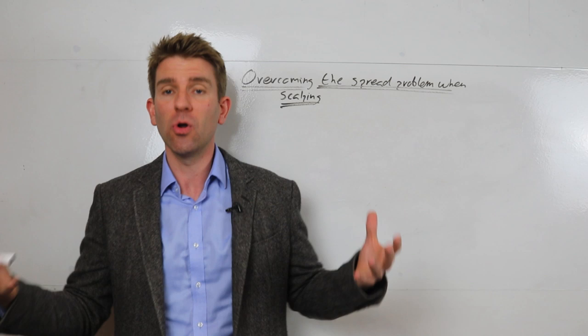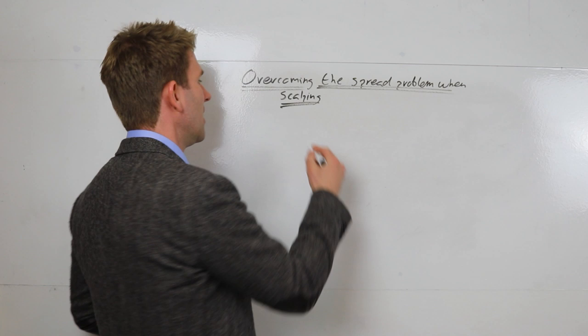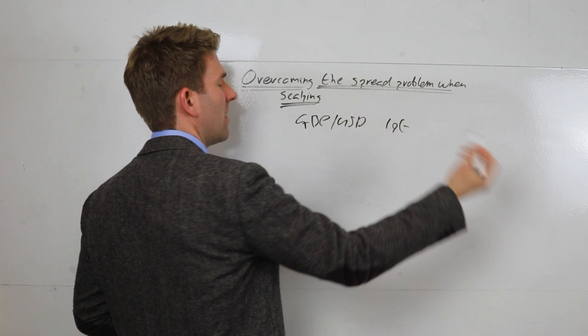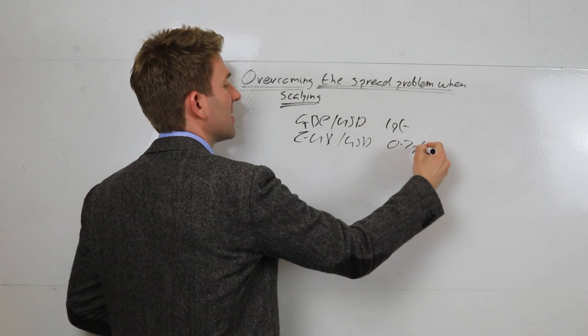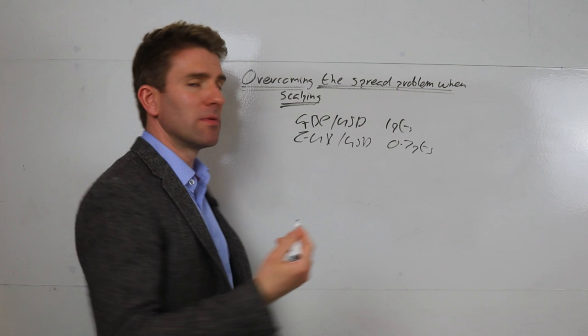If you imagine something like GBPUSD is around what is it, about one point at the moment. It varies, doesn't it. EURUSD is about the same, but it's normally about 0.7, something like that, 0.7 points. I'm talking about for spread betting here by the way, but it's all going to be very similar.